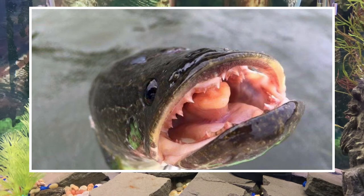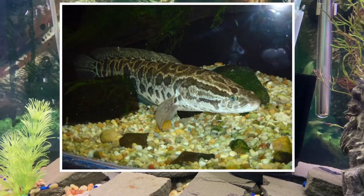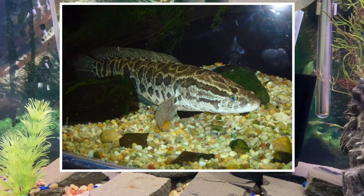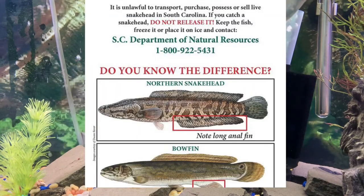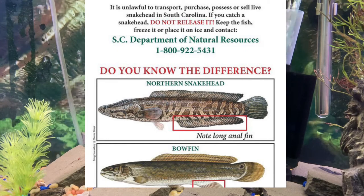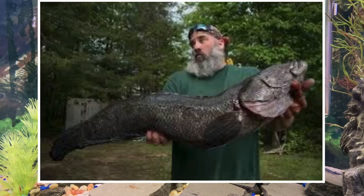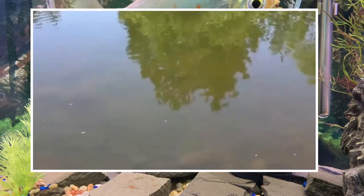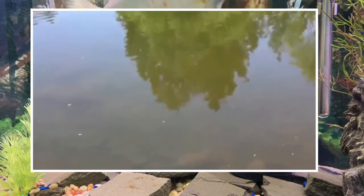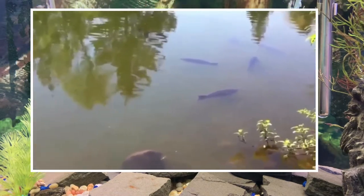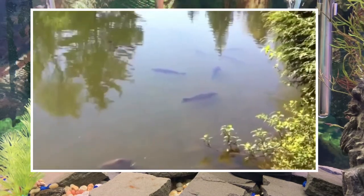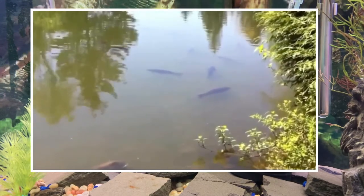Snakeheads live in freshwater streams, rivers, wetlands, and ponds — they prefer low-moving, stagnant waters. They can survive cold winters and low-oxygen environments, and they're capable of breathing atmospheric oxygen. They may even be able to jump out of the water and cross land. Look at the size of this thing — imagine getting your hands stuck in that mouth. And this right here is New York's Central Park. These snakeheads are everywhere.